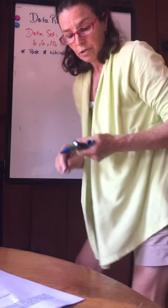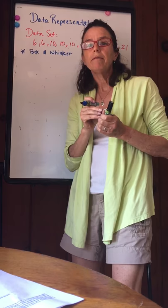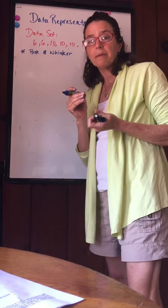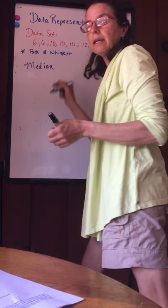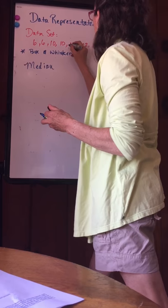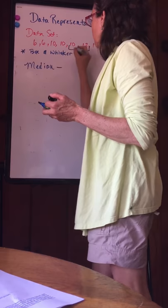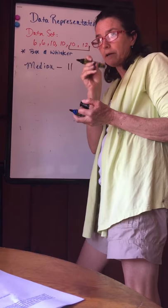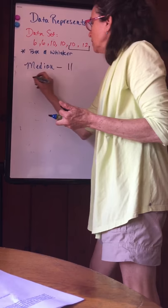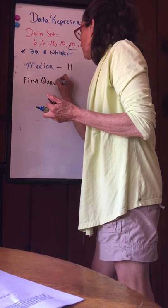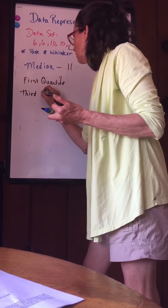Last is box and whiskers and to do a box and whiskers we have to review a little bit on median of a data set. So if I say median you can probably tell me it's the middle number. Remember that your data has to be in order from least to greatest. So the median of this set is the middle number. Oops, I have two middle numbers. My median is going to be the average of those. So my median for this is 11.